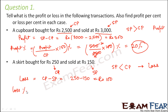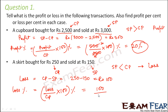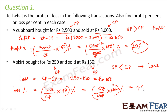So rupees 100 is the loss. How do we calculate the loss percentage? It is given by loss divided by CP into 100%. So this would be 100 divided by 250 into 100, which is 40. So the loss is 40%.